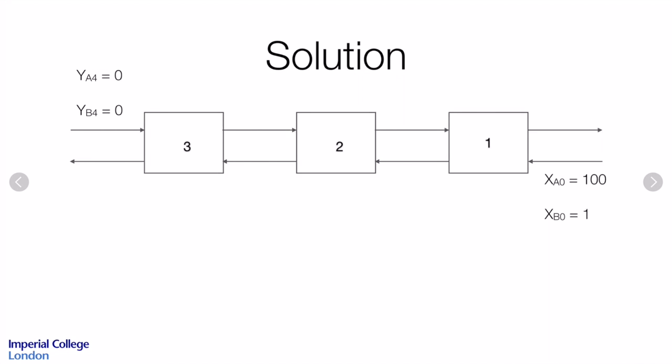We start our solution by drawing our system. We have three ideal stages. This is the aqueous feed with a concentration of A of 100 grams per litre and B of 1 curie per litre. This is our solvent feed stream, which is pure, so there's no A and no B.